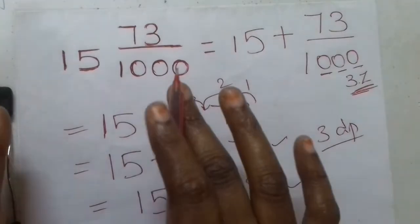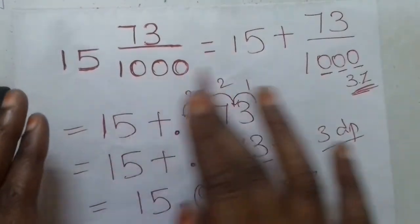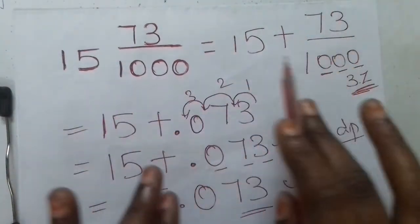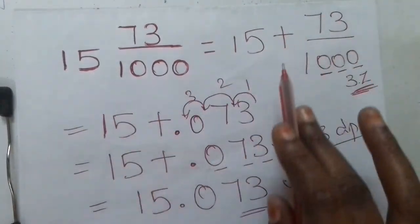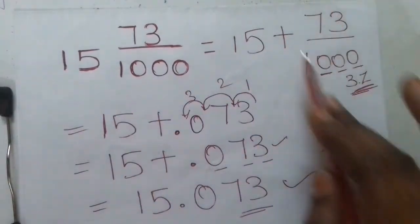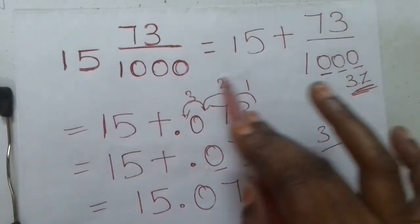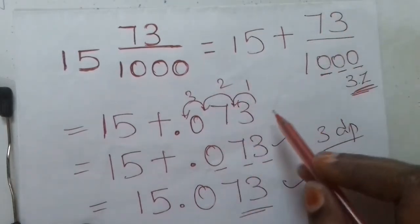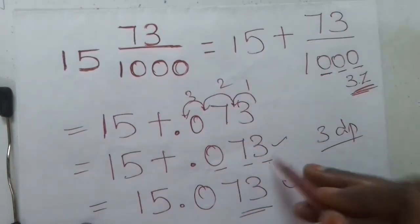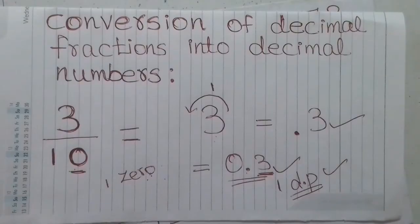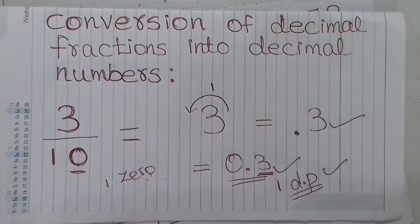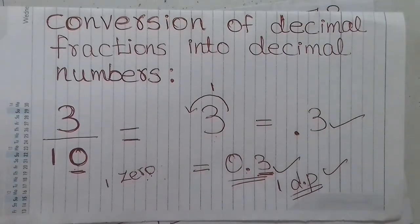For a mixed fraction, the whole number part stays as it is, and the decimal fraction part is converted to a decimal number, then we add them together. This is how we do the conversion of decimal fractions into decimal numbers. Thank you so much for watching this video.